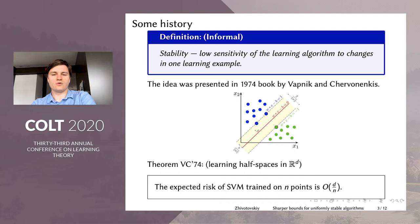So in this sense, the algorithm is stable. And this allowed Vapnik and Chervonenkis to prove that the expected risk of this hard margin SVM scales as the dimension over the sample size n.